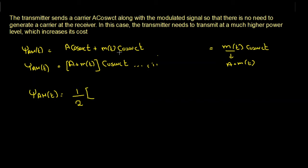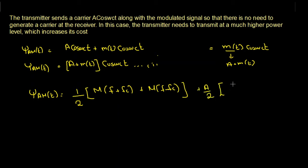To convert to the frequency domain, for the m(t)·cos(ωct) term we already know from double sideband suppressed carrier that the result is (1/2)[M(f + fc) + M(f − fc)]. For the additional carrier term A·cos(ωct), we get (A/2)[δ(f + fc) + δ(f − fc)]. So the spectrum of AM with carrier is the same as DSB-SC except for two additional impulses at ±fc.